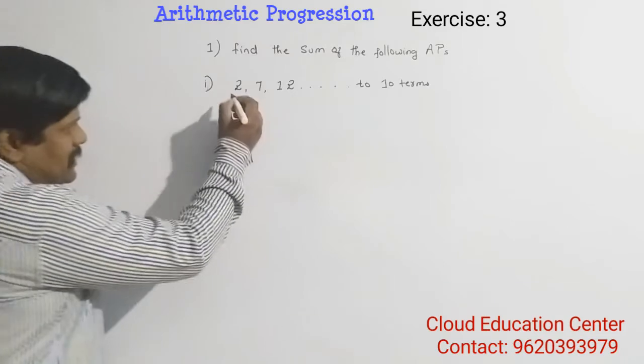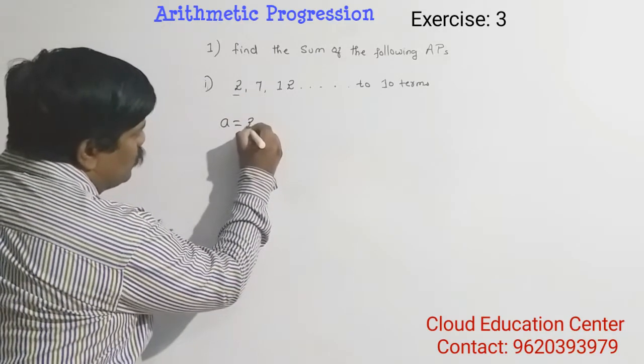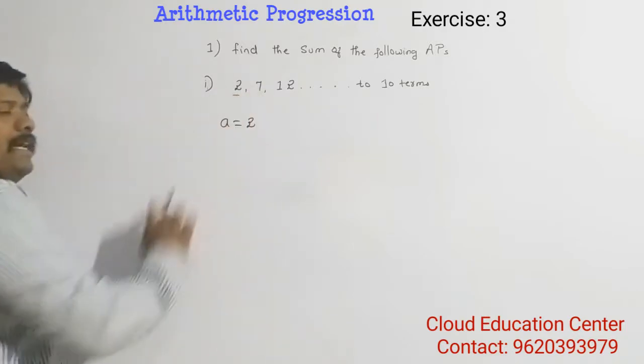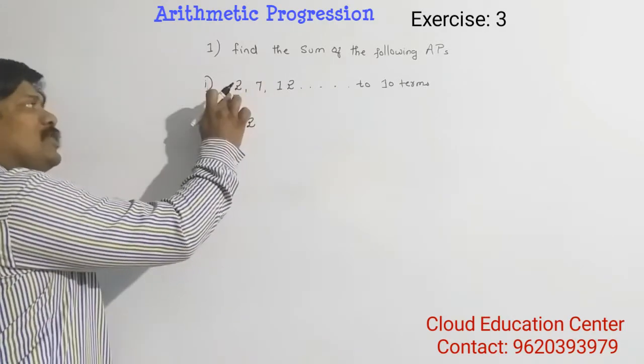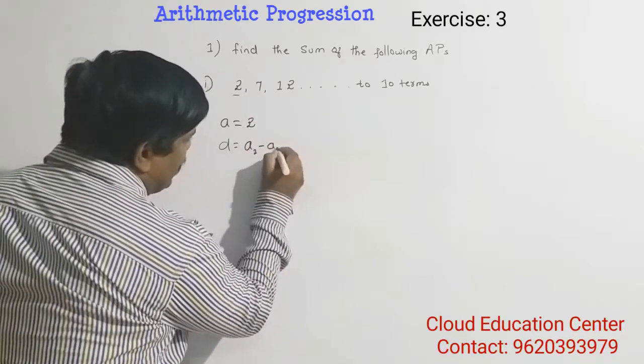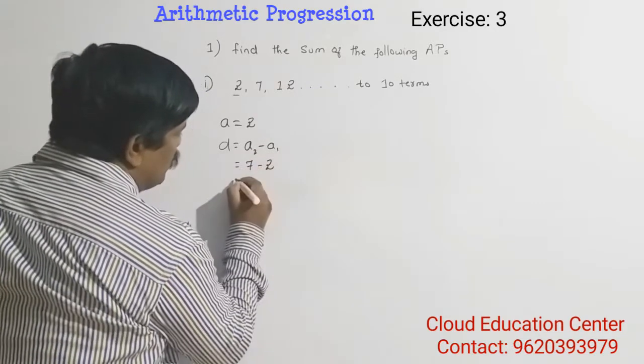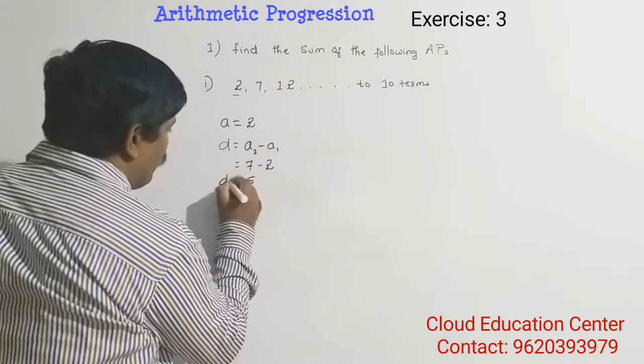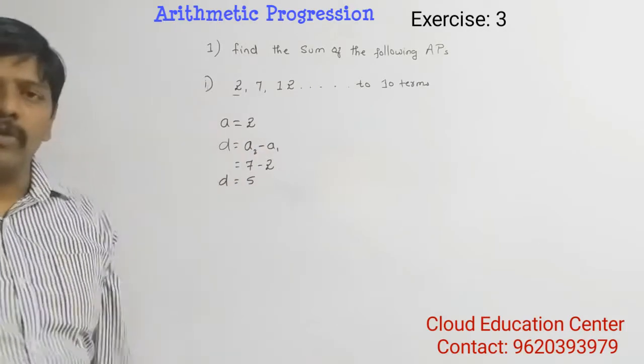Here the first term is called A, that is 2. And the difference D is nothing but 7 minus 2, 7 minus 2 is 5. That is A2 minus A1, 7 minus 2 is equal to 5. We found that D is equal to 5, A is equal to 2.